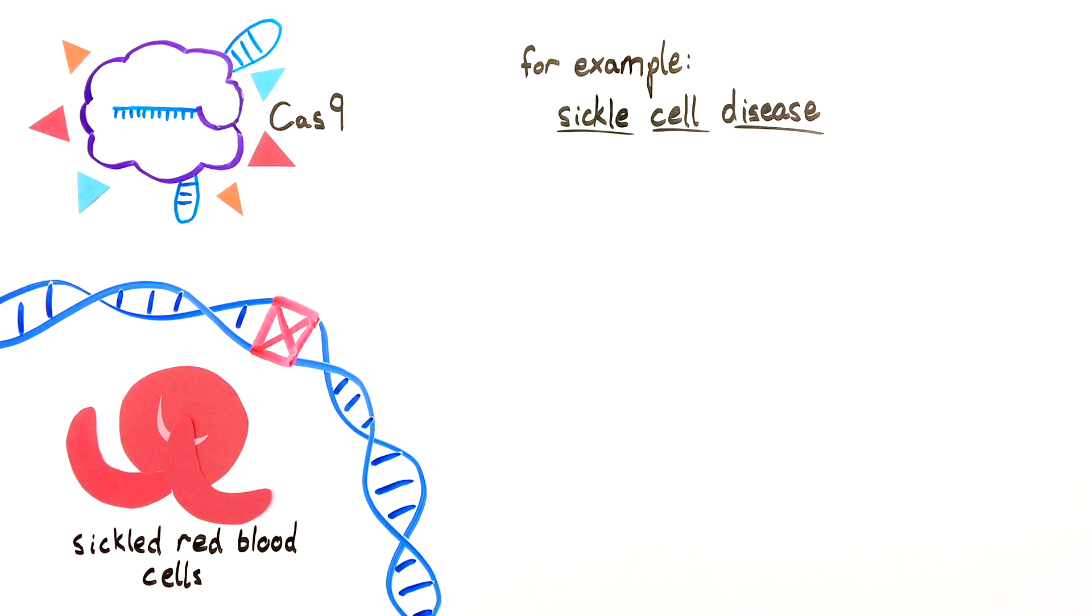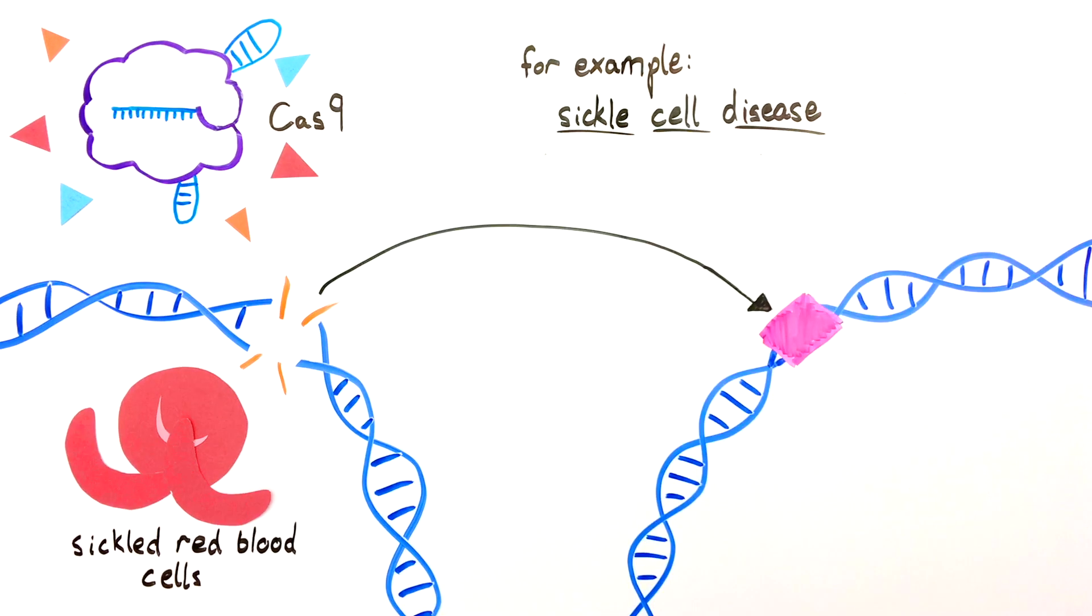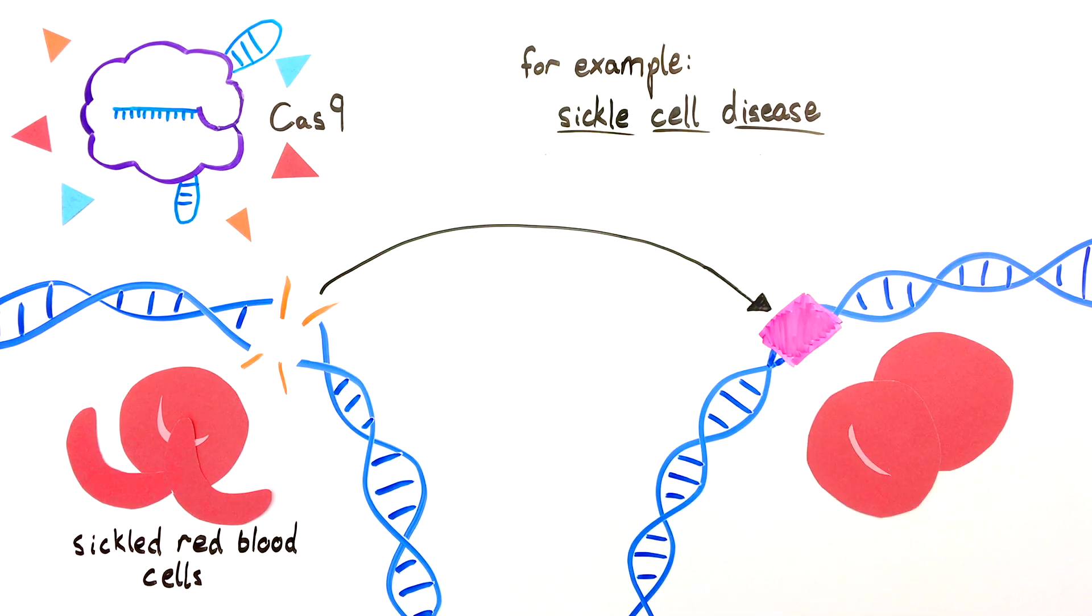Scientists have learned how Cas9 locates and cuts a specific sequence of DNA, but that's only half the equation. Once the cut is made, we need to understand how the DNA break is repaired in order to effectively add, subtract, or change the genetic letters.